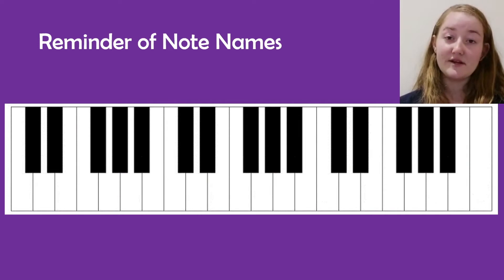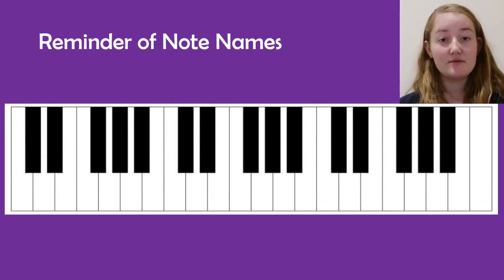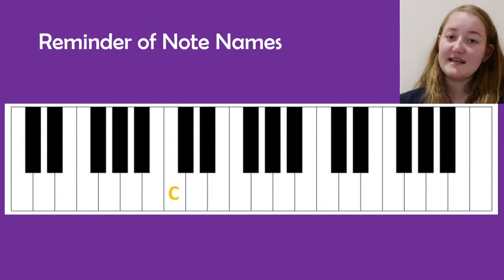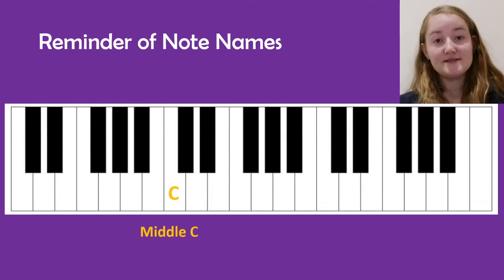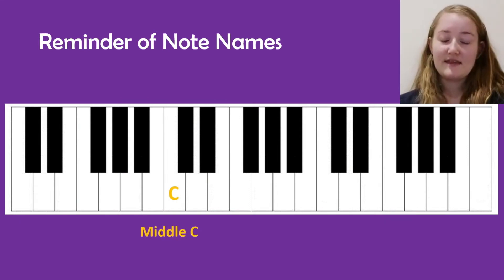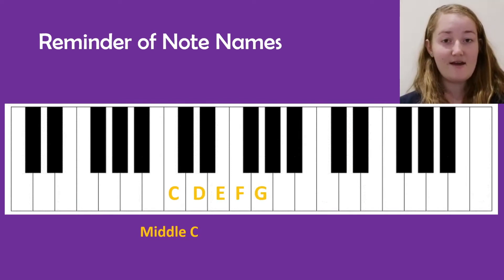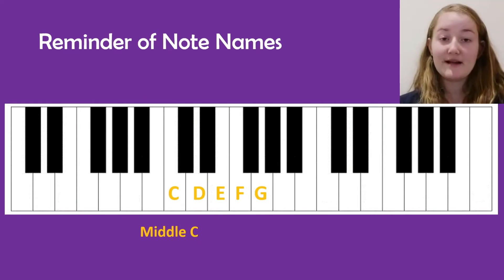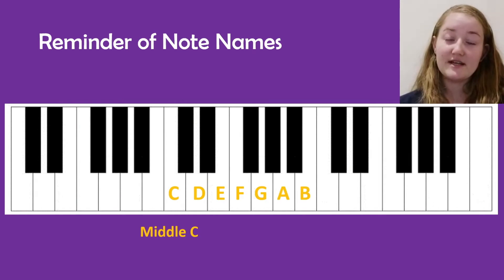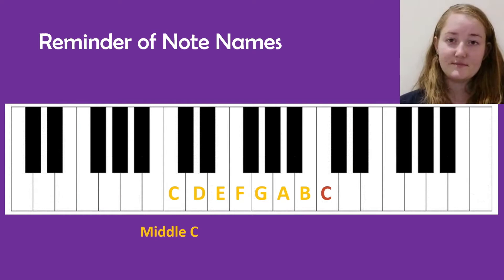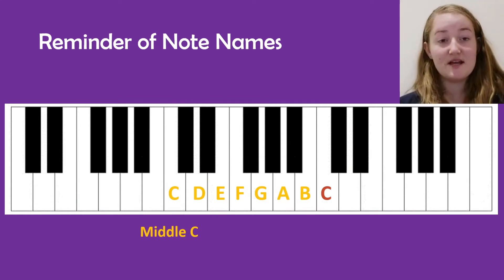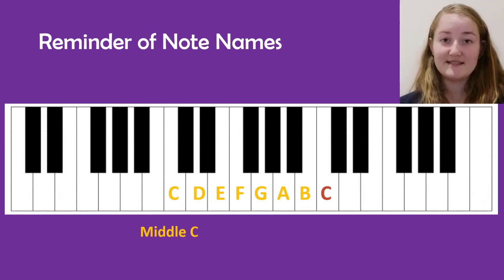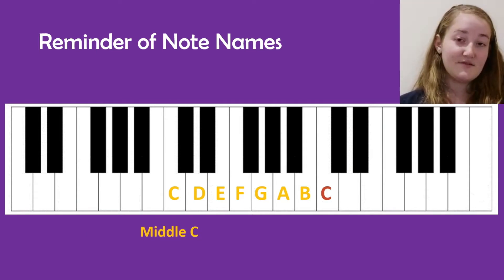You've probably already learnt the names of the white notes on the piano. Just as a reminder, we've got C here — the C in the middle of the piano is called middle C. Then we continue up in alphabetical order: D, E, F, G. Remember, once you've got to G we go back to the start of the alphabet, so next we have A, then B, and then another C. This is the start of our next octave, which means another set of eight white keys.